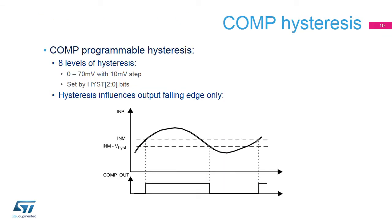The comparator includes programmable hysteresis to avoid spurious output transitions with noisy input signals. It is non-symmetrical and only acts on the falling edge of the comparator output. The internal hysteresis function can be disabled to allow setting the amount of hysteresis with external components, which can be useful for example when exiting a low-power mode.